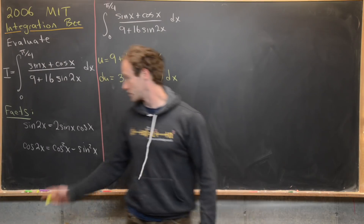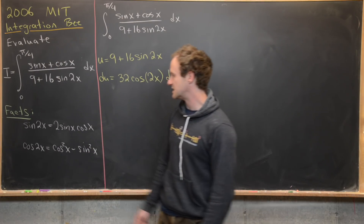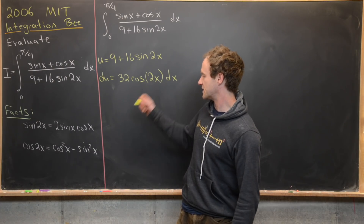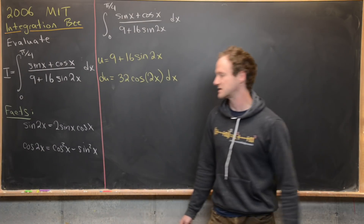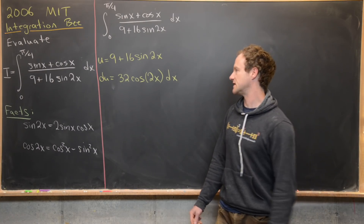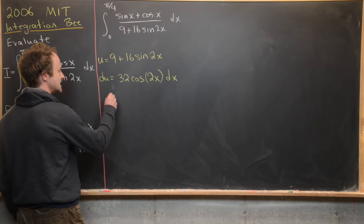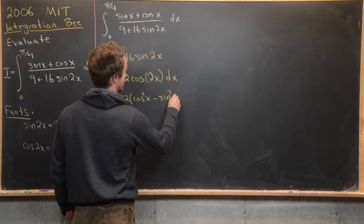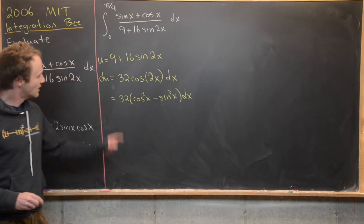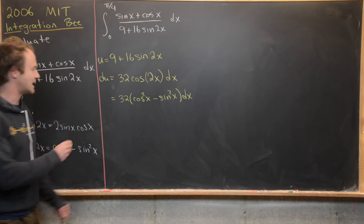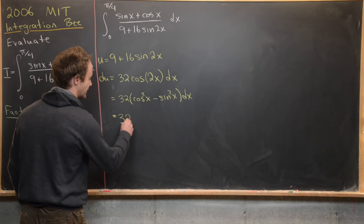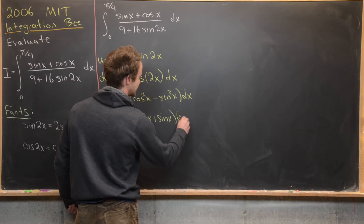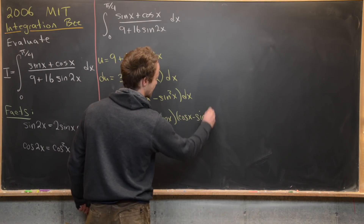Perhaps we can use some trig identities to help us. We've got the double angle identities for sine and cosine down here. We've got cosine here, so let's use that: cosine of 2x equals cosine squared of x minus sine squared of x. So we can rewrite du as 32 times cosine squared of x minus sine squared of x dx.